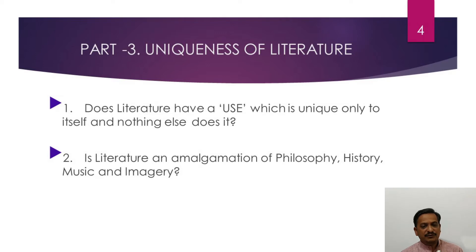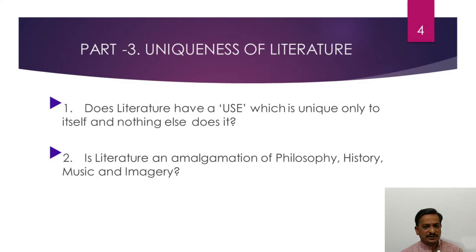There are certain views that literature is made up of many elements like philosophy, history, music and others, and thus they do not want literature to get an independent identity. They would always define literature as a combination of all the other streams of knowledge and would always look at literature through its connection to history, philosophy, geography and others.